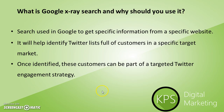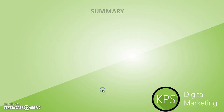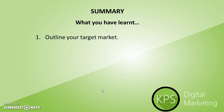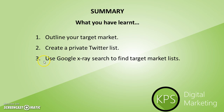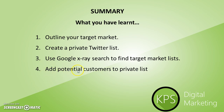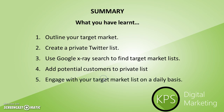So let's go over what we've learned today. First, you need to outline your target market and understand who you're trying to target. Then you're going to create a private Twitter list which you can start filling with specific customer segments. Then use Google X-Ray Search to find target market lists. Google X-Ray Search will help you find specific lists focused on the people you're trying to target. Then add these potential customers to your private list. And finally, engage with your target market list on a daily basis — favourite their content, share their content, speak to them — and basically engage with them on Twitter so you can get your brand out there and start building that rapport.